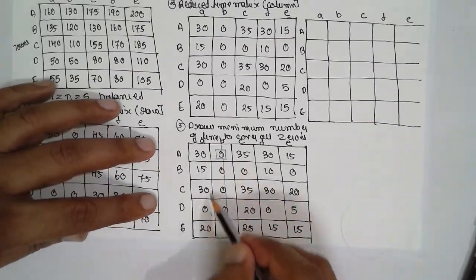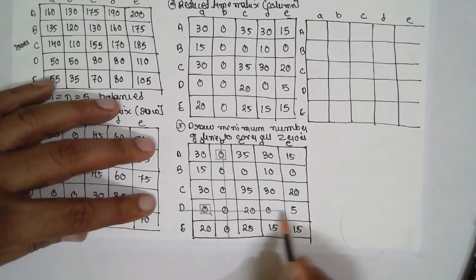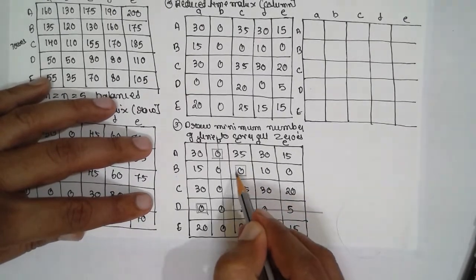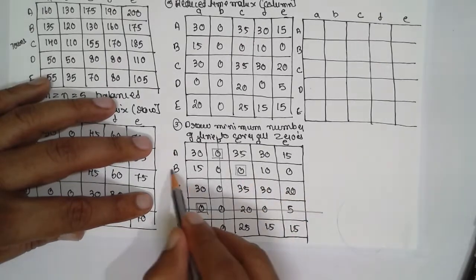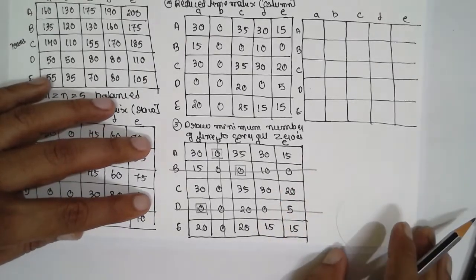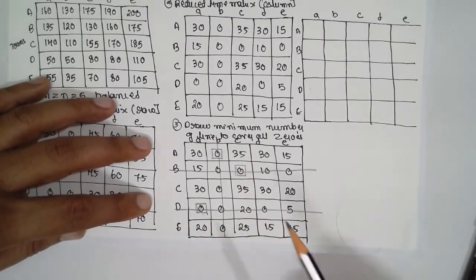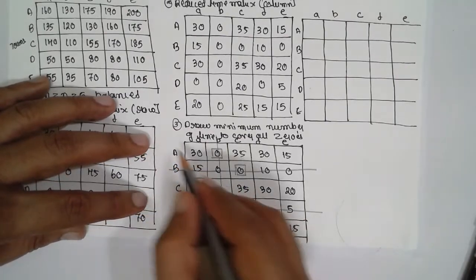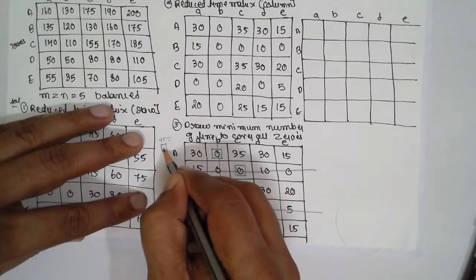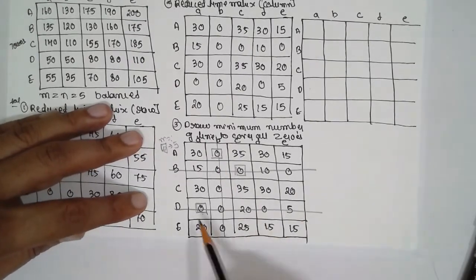Continuing column-wise: the second column has a single zero — assign it and eliminate the row. The third column has no zero. The fourth column has no zero. Count the assigned zeros: 1, 2, 3 — only three assigned zeros. But we require M equals N equals 5, so we need 5 assigned zeros. Since we only have 3, we must proceed with an iteration.